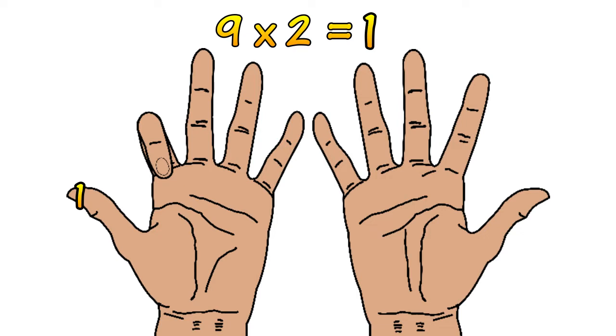So you put that in the answer line and you count how many digits there are to the right of the second finger. In this case there are 8 and you put that in the answer line. 1 and 8 make 18. So therefore 9 times 2 equals 18.